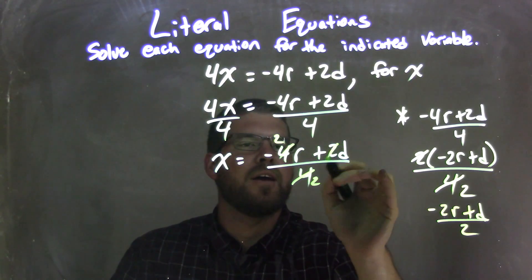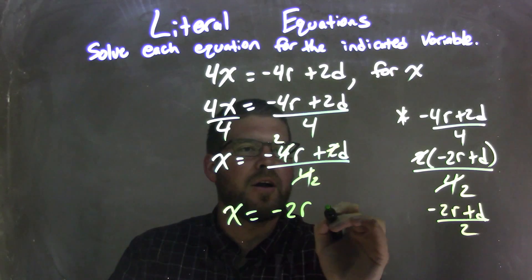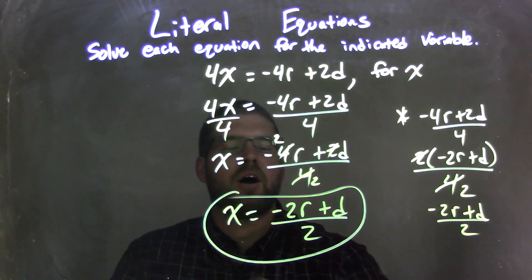2, that's a 2, and that just gets eliminated. And so we're left with x equals negative 2r plus d over 2, and that is our final answer.